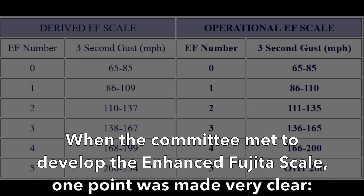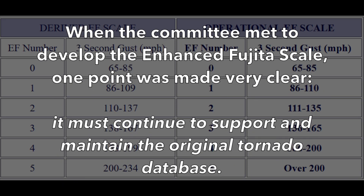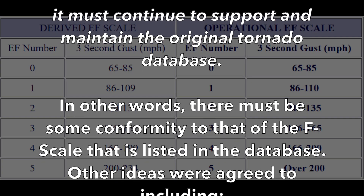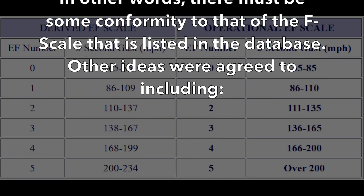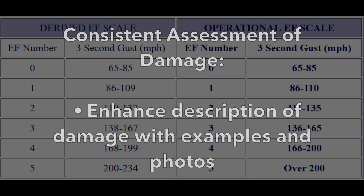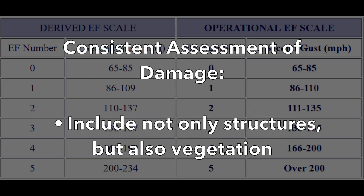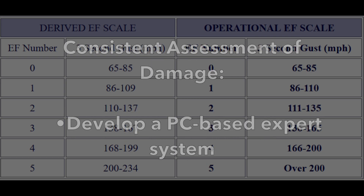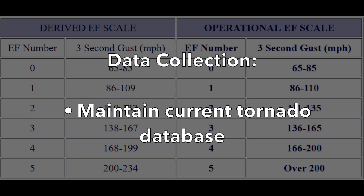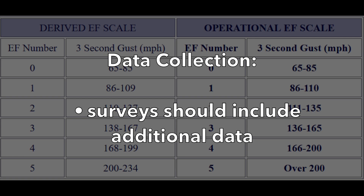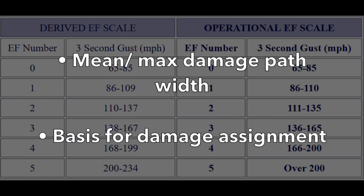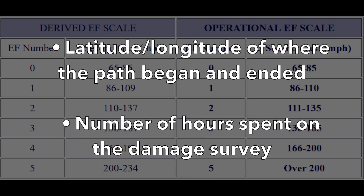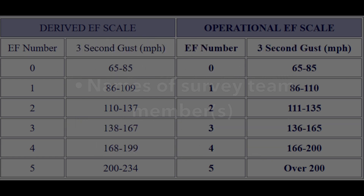When the committee met to develop the Enhanced Fujita scale, one point was made very clear: it must continue to support and maintain the original tornado database — there must be conformity with the existing F scale database. Other agreed-upon ideas included consistent assessment of damage, enhanced damage descriptions with examples and photos, inclusion of not only structures but also vegetation, basing damage assignment on more than one structure if available, developing a PC-based expert system, and maintaining data such as mean and maximum damage path width, latitude and longitude, hours spent surveying, and names of survey team members.